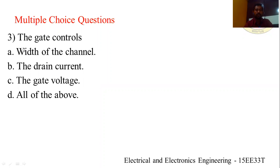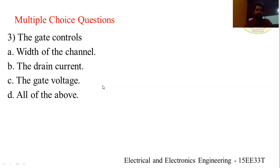Third question: the gate controls — options are: (A) width of the channel, (B) drain current, (C) gate voltage, (D) all the above. The answer is D — all the above. The gate controls the width of the channel, the drain current, and the gate voltage. So the answer is all the above.